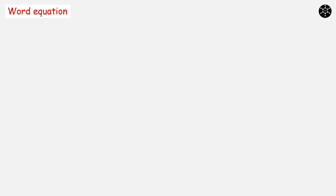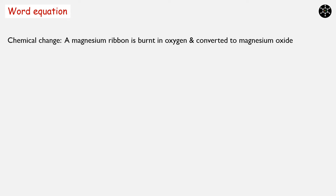Among numerous ways of writing a chemical equation, the first one is word equation. Let us consider a chemical change where a magnesium ribbon is burnt in oxygen and converted to magnesium oxide. Here we are writing the chemical change in a descriptive manner, so this way of representation can be called a descriptive equation.